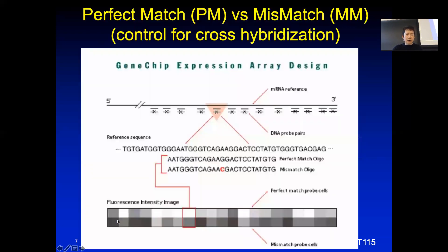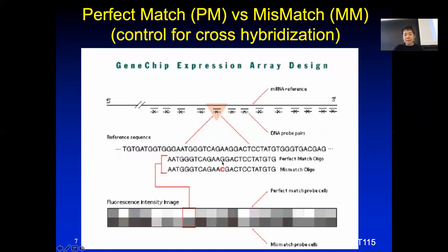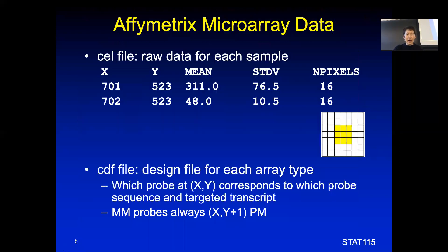On this Affymetrix array, in addition to having a probe that directly hybridizes — a reverse complement to your RNA, which is the exact sequence to your target transcript — that probe is called a perfect match probe. There is usually also a mismatch probe. Affymetrix probes are 25 nucleotides in length. Everything else is the same except on the 13th position, the middle position, which has the complementary sequence. So if the perfect match is a G, the mismatch will be a C; if the perfect match is a T, the mismatch will be an A. The mismatch probe is always right next to the perfect match probe on this array.